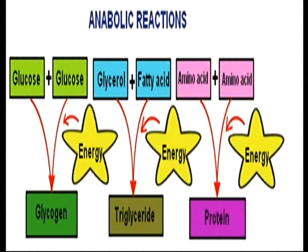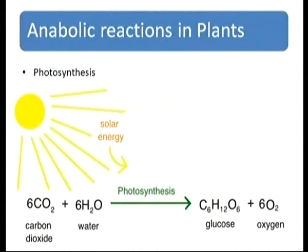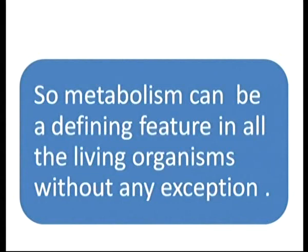Examples of anabolic reactions: glucose plus glucose combine to form glycogen (a larger molecule), requiring energy. Glycerol plus fatty acid form triglycerides, requiring energy. Amino acids unite to form proteins, requiring energy. In plants, the best example of an anabolic reaction is photosynthesis — plants make their own food using simpler substances like carbon dioxide, water, and solar energy. Therefore, metabolism can be considered a defining feature of all living organisms without exception.